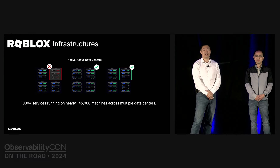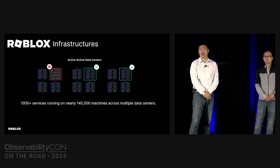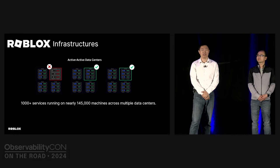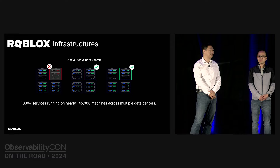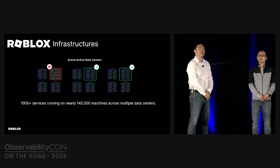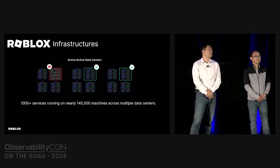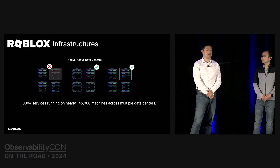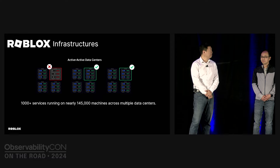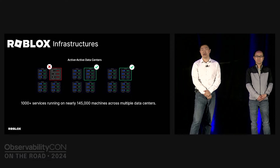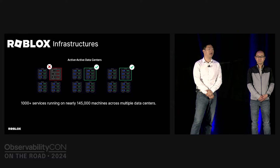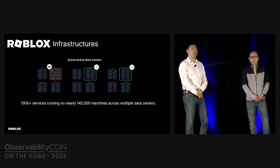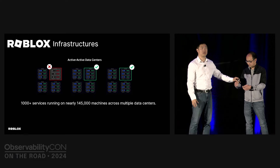Behind that is actually a pretty complex system. Roblox still runs primarily on-prem, meaning we have our major data centers within the US and edge data centers distributed globally. Together we have over 1,000 microservices running on hundreds of thousands of machines. As you can imagine, there are a lot of challenges on how we monitor, debug, and keep the system up.